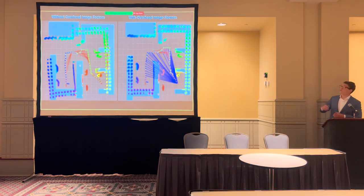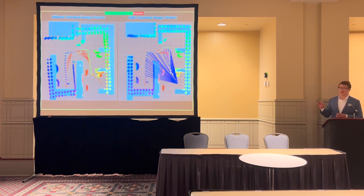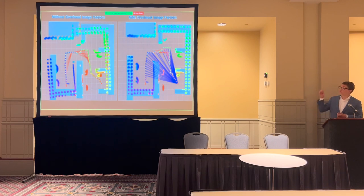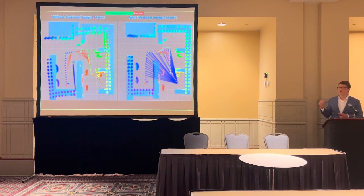On the left, we have an example SLAM mission without overhead image factors. Green lines are odometry, red lines are loop closures. You can see, compared to the gray overhead image mask, drift is heavily evident. When we add the blue lines on the right-hand side — the overhead image factors — you can see we drastically reduce that mission drift compared to the gray overhead image mask.